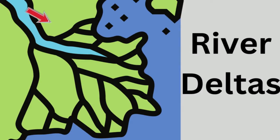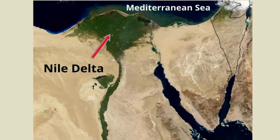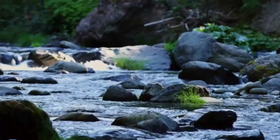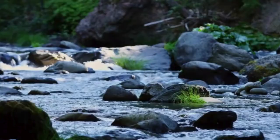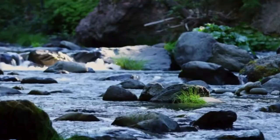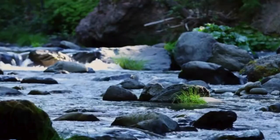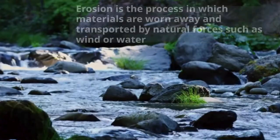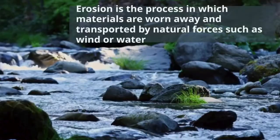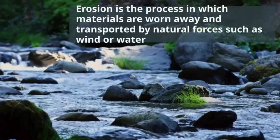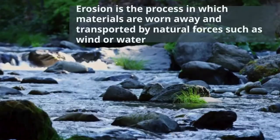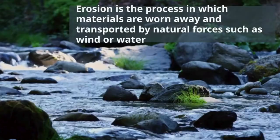River deltas form when a river carrying sediment reaches a body of water such as a lake or an ocean. As the river flows, it picks up small particles, rocks, sand, and other items created from weathering and erosion. Erosion is the process in which materials are worn away and transported by natural forces such as wind and water.